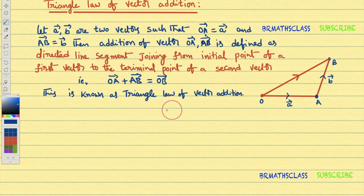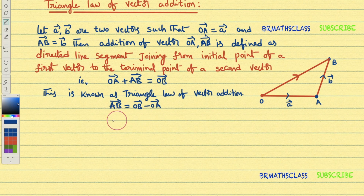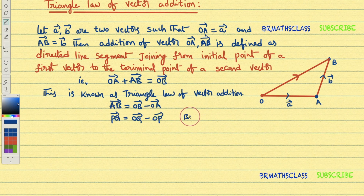One more very important point: OA-bar plus AB-bar equals OB-bar. From this, AB-bar equals OB-bar minus OA-bar. From now onwards, we can write AB-bar as OB-bar minus OA-bar. Similarly, PQ-bar can be written as OQ-bar minus OP-bar, and BD-bar is OD-bar minus OB-bar.